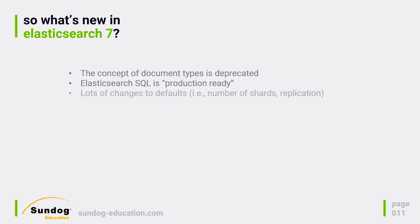There have been a lot of changes to the default configuration settings for Elasticsearch, especially as they relate to the number of default shards, which is now 1 instead of 5, and how replication works. In a production setting though, you really should be tuning these values yourself anyhow.